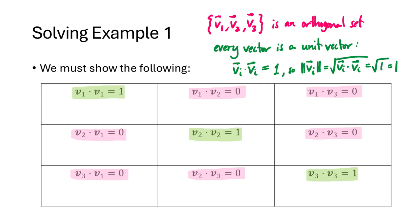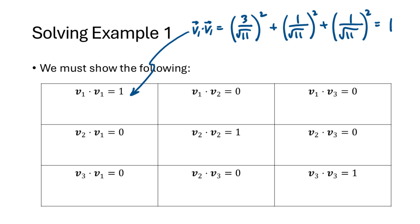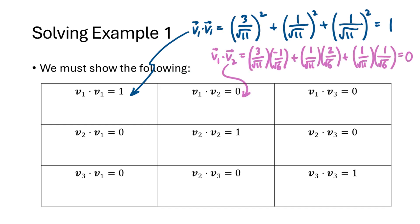Let's compute a couple of these. v1 dot v1 is the sum of the squares of the entries of v1, which equals 1 as you can see here. We can also compute v1 dot v2, which works out to be 0. Continuing in this way, we compute all nine dot products and show that this is an orthonormal set.